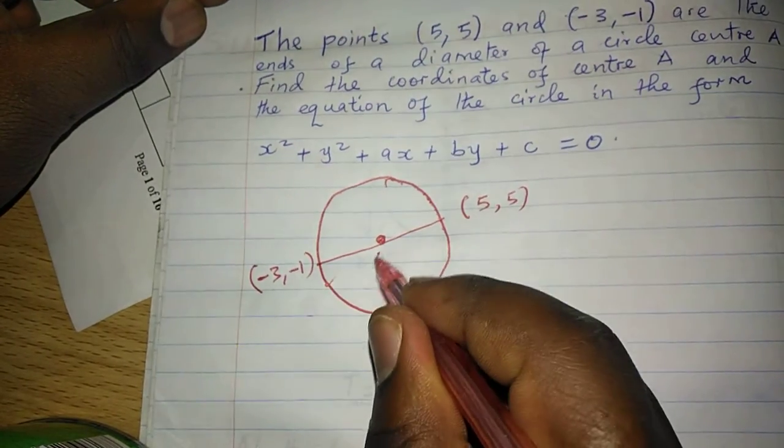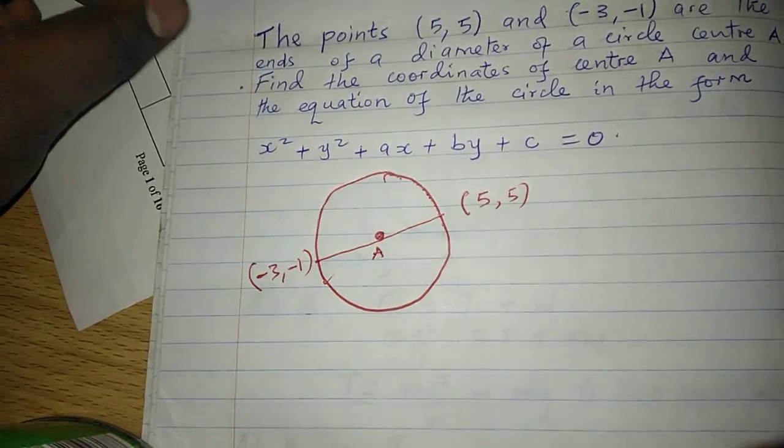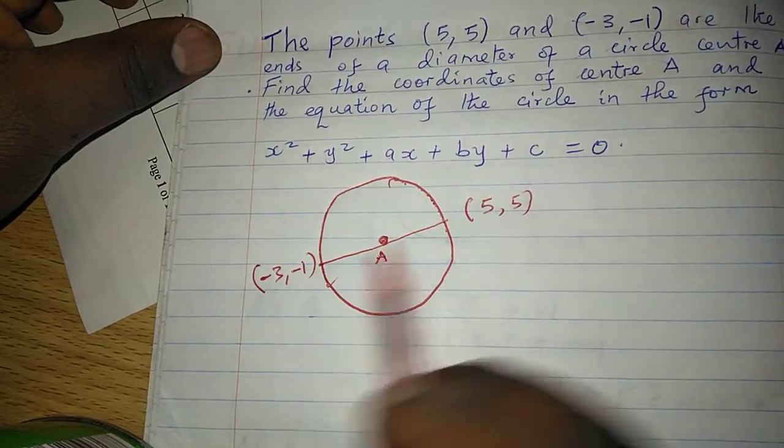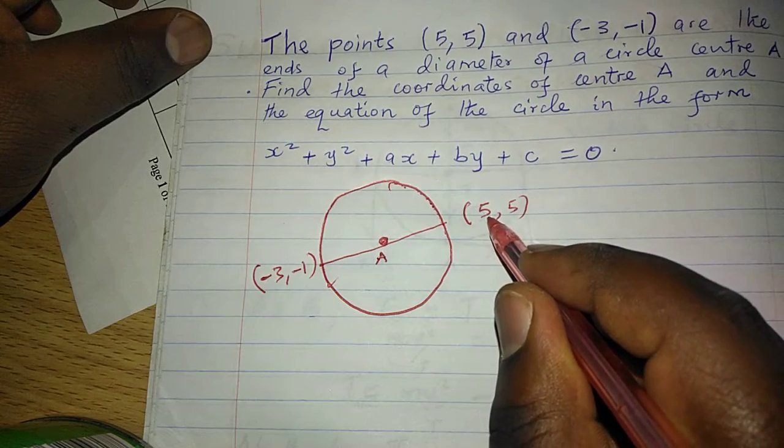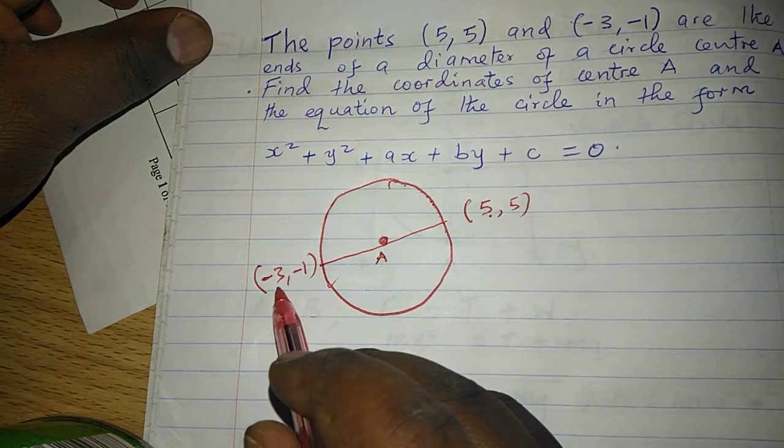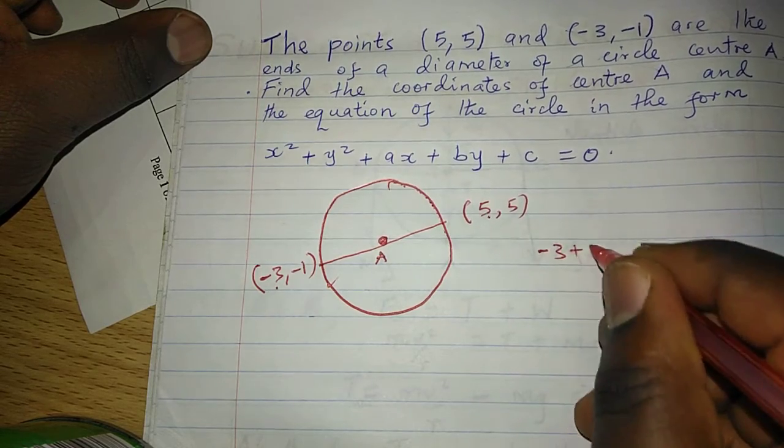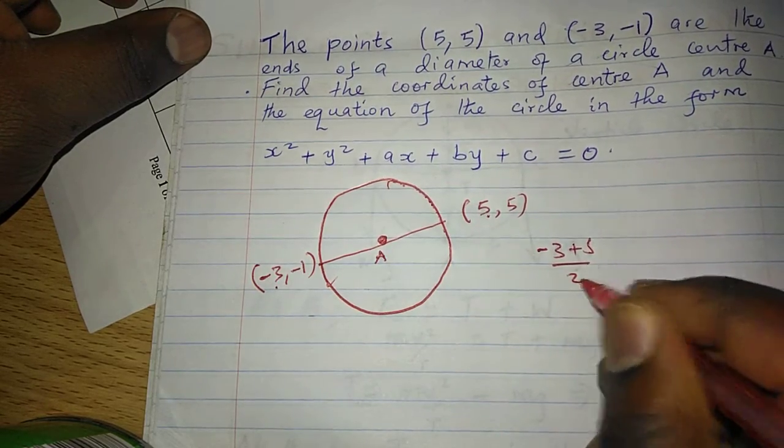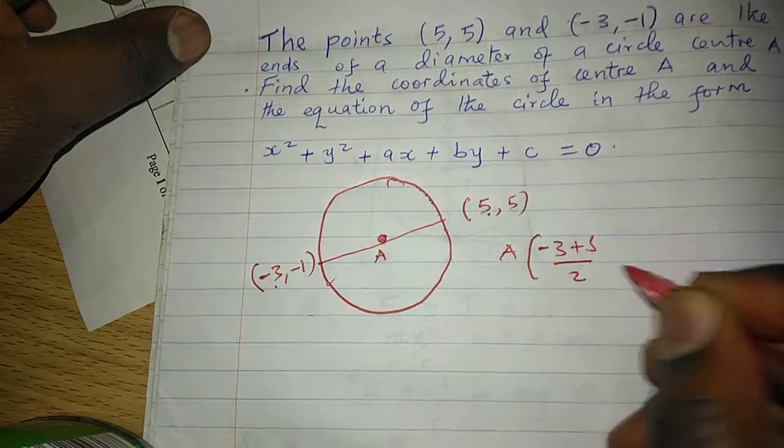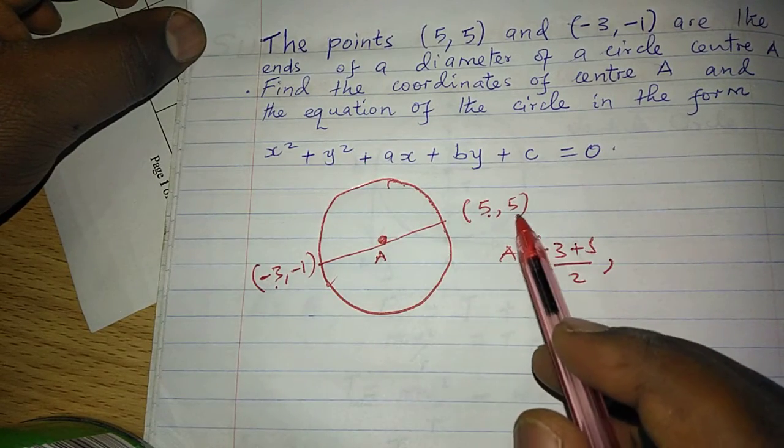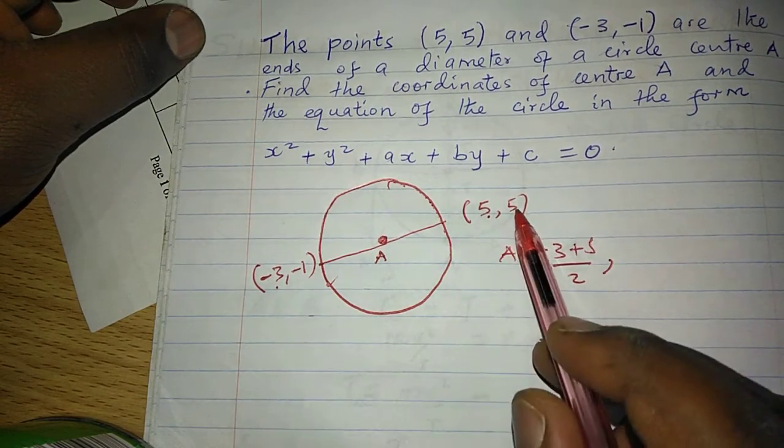Such that now, to get the coordinates of the center, we need the midpoint of this diameter. So the midpoint is given by adding the x coordinates and dividing by 2. Therefore, -3 + 5 divided by 2. The y coordinate will be -1 + 5